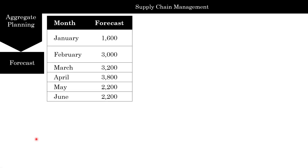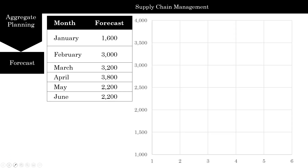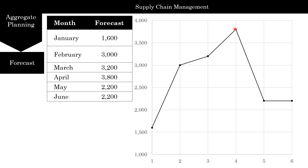So let's take an example problem. Here is the forecast for the next six months — January to June. Like everybody who does a good forecast, let's go ahead and plot this forecast. We see that we start in January, go up right up to March and April, and then we start dropping. This is our demand and this is how we handle it.